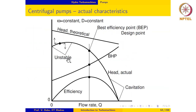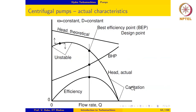Two portions of the characteristic are highlighted for special attention: the rising portion of the characteristic, which has been termed unstable, and a portion at very high flow rates. Let us take the high flow rate region first.